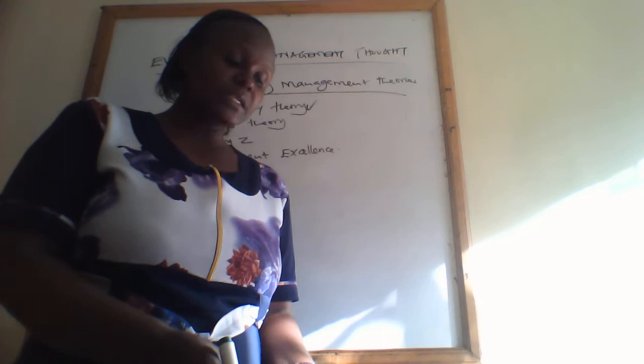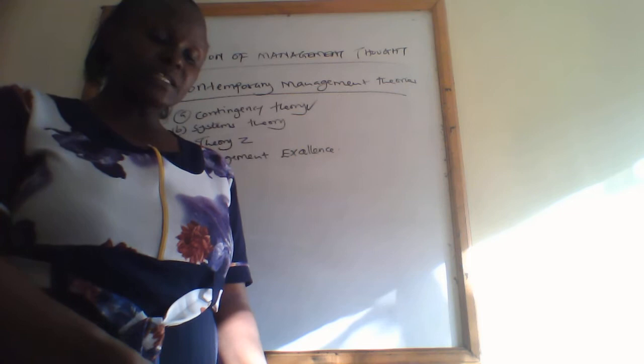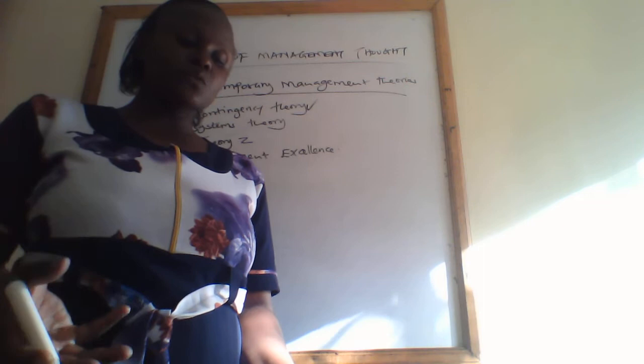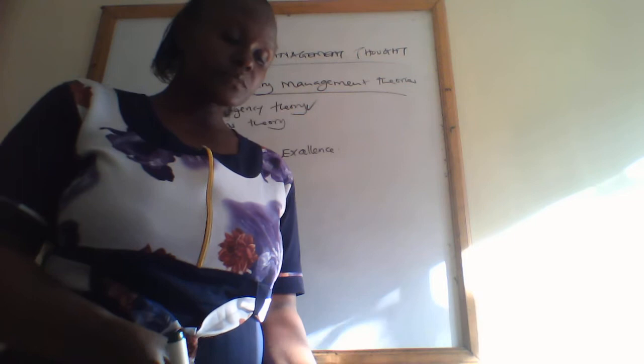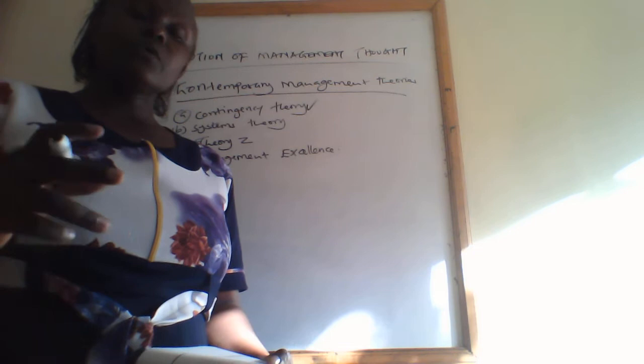A system has four basic parts. It receives inputs from the environment. After receiving inputs, it transforms the resources into output — that is finished goods. And then finally it receives feedback from the environment. The feedback from the environment serves as a source of information about the performance of the firm, and hence it serves as a good basis for decision making.